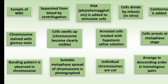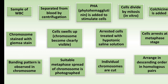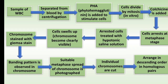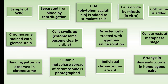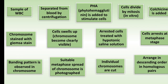At the mitosis stage, colchicine is added. After adding colchicine, cells are arrested at the metaphase stage — cell division stops. You know that cell division is a continuous process, but after adding colchicine the division will stop at metaphase. These arrested cells are then treated with a hypotonic saline solution.